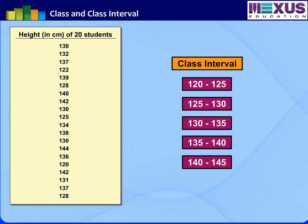The class interval must always be of equal size. The number of classes is neither too big nor too small — that is, the optimum number of classes is between 5 and 10. We need to group the data in such a way that classes are divided equally in an optimum number.